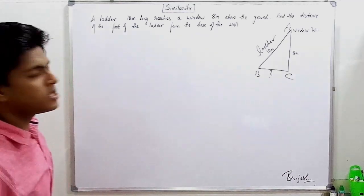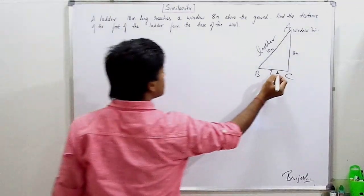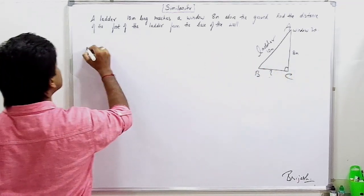So you have to find BC. What is this? Simple. Perpendicular. Solution.